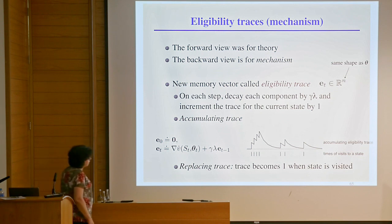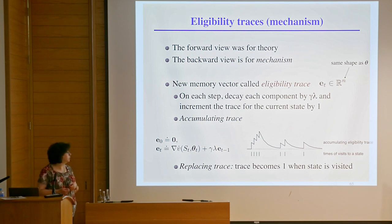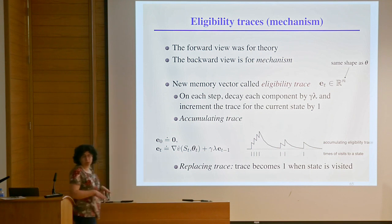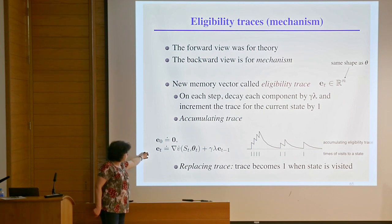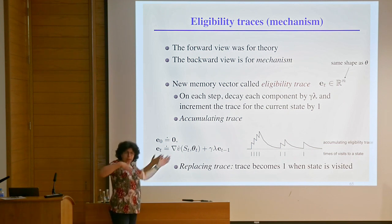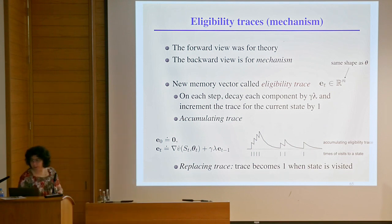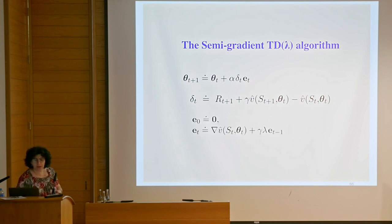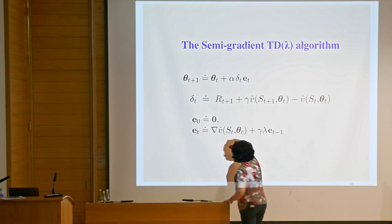The algorithm maintains an extra set of parameters called the eligibility trace in addition to the function approximator parameters theta. We start the eligibility trace at zero—nobody's eligible yet for updates—and then we accumulate information in this vector. We always add the new gradient and decay the old value by gamma lambda. The update for the value function now uses this eligibility trace instead of just the gradient, so the update to the parameter vector is based on the temporal difference error multiplied by the eligibility rather than just the gradient.